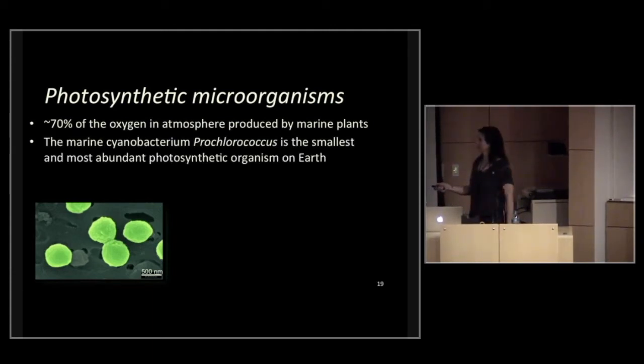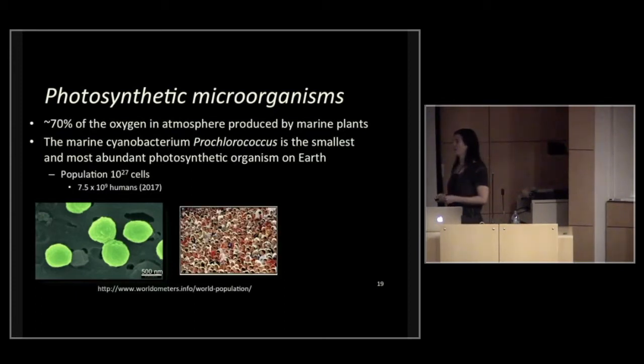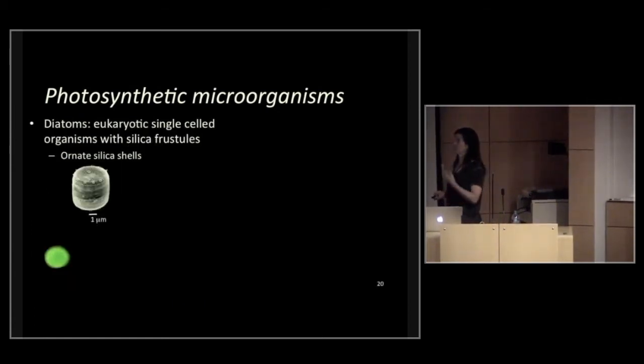If we look at Prochlorococcus, I have an image down here. It's a little less than a micron in size. It's a photosynthetic organism. It's the smallest, yet the most abundant, microorganism on Earth. The population is 10 to the 27th cells. And for perspective, again, remember, we're only present at 7.5 billion. That's 7.5 times 10 to the 9th. There's other types of microorganisms, and this is one that's dear to my heart. This is the diatom. Diatoms are not in the domains of life of archaea or bacteria. Instead, diatoms are eukaryotic single-celled organisms that have a silica frustule. This is an image of what one of the diatoms looks like. It's called Thalassiosira pseudonana. It's about 5 microns in size. The shell on the outside is called the frustule, and it's made of silica or glass. And they're very ornate, so there's beautiful images of all different types of morphologies of these diatoms.